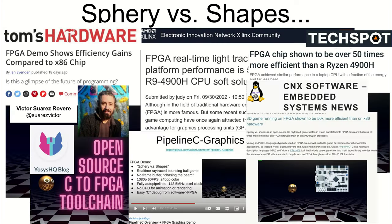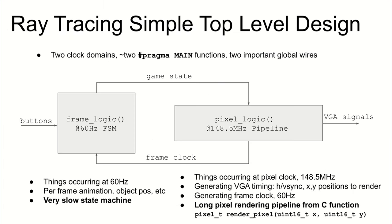Onto the live ray tracing demo — just kidding, we don't have time for that in seven minutes. If you check out online, there's information about Sphery vs. Shapes, the game created by my collaborator Victor, which even got a write-up by the Yosys HQ blog — I'll have links at the end. The top level of that ray trace game design has two primary global variables — the game state and a clock that gets fed back — and two top-level main functions in two clock domains: one rendering pixels in a long automatic pixel rendering pipeline, and the other doing gameplay and animation logic.